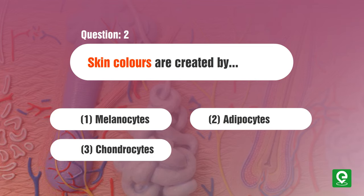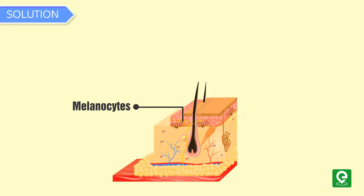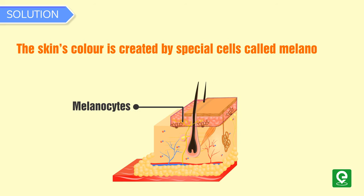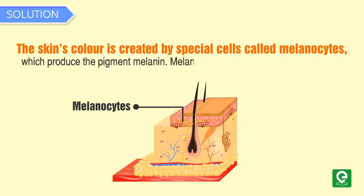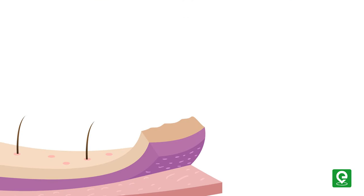Question 2: Skin color is created by — (1) melanocytes, (2) adipocytes, (3) chondrocytes, (4) myocytes. This question was asked in AIIMS 2013. Solution: The skin's color is created by special cells called melanocytes, which produce the pigment melanin. Melanocytes are located in the epidermis. Hence option 1 is the correct answer.